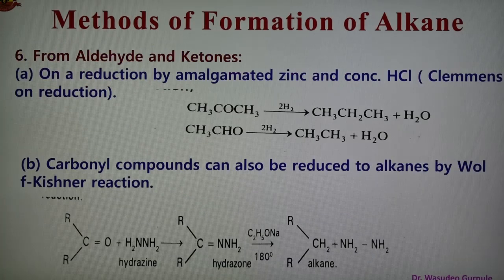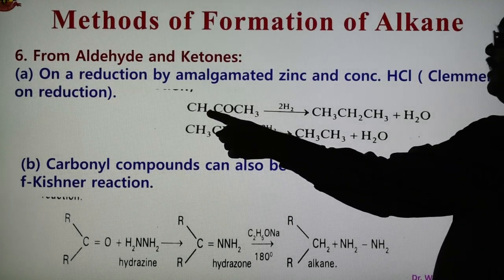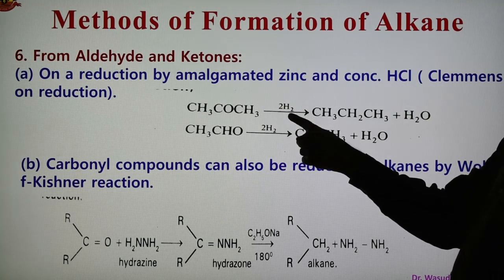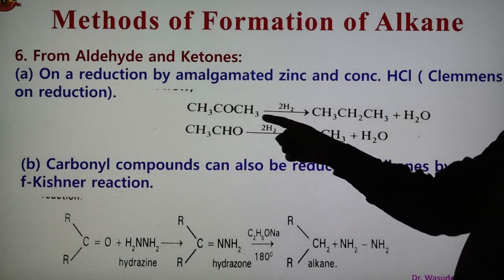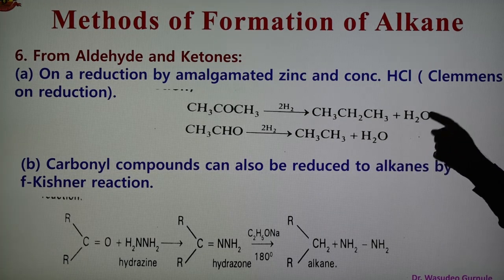Alkanes can also be obtained from aldehydes and ketones. In the Clemmensen reduction, aldehyde or ketone is reduced using amalgamated zinc and concentrated HCl. The amalgamated zinc and concentrated HCl act as a reducing agent providing nascent hydrogen. For example, acetone (a ketone) undergoes Clemmensen reduction to give propane and water.